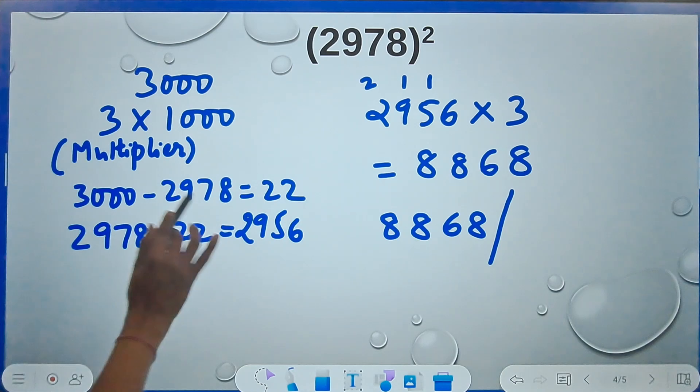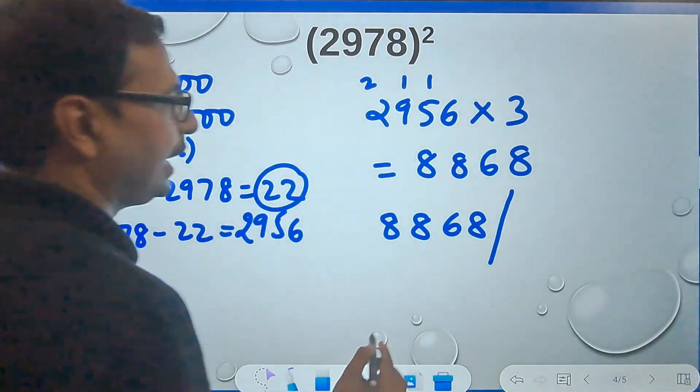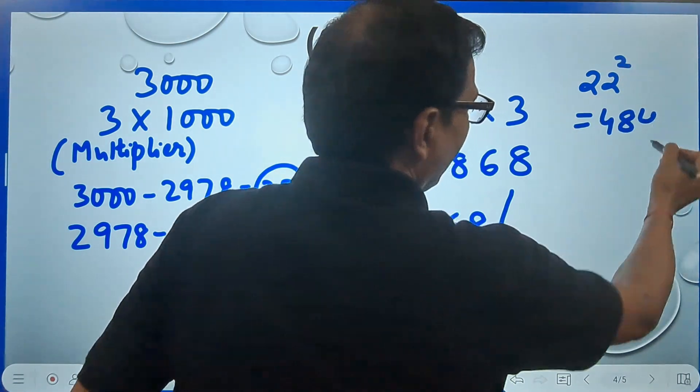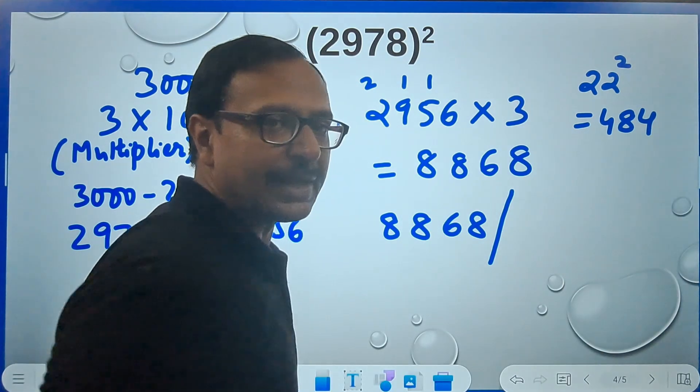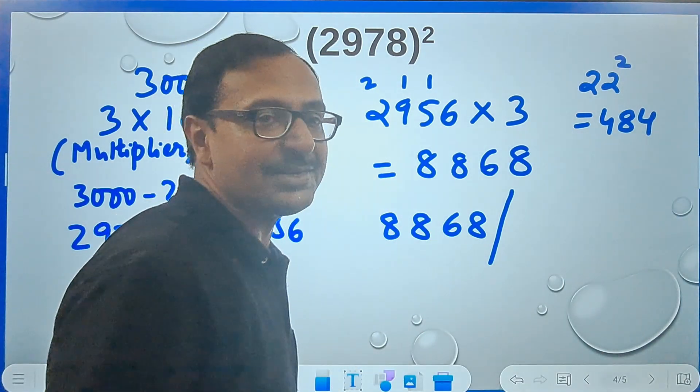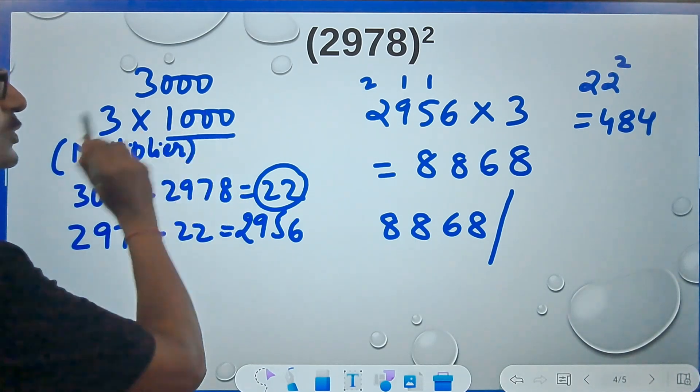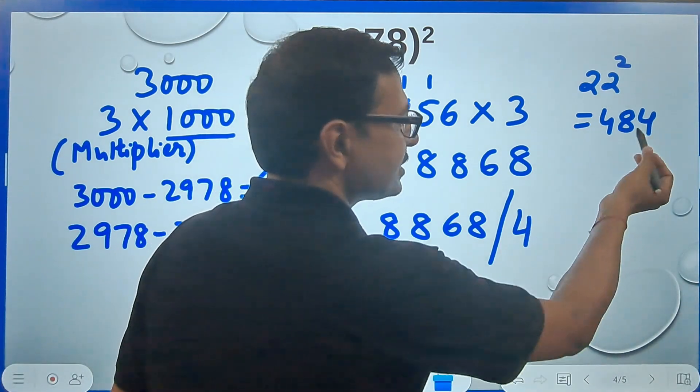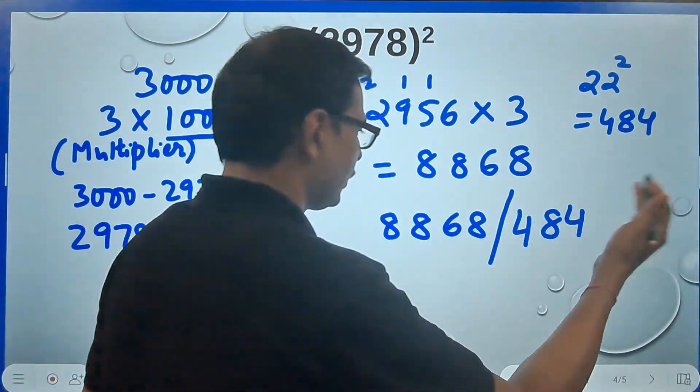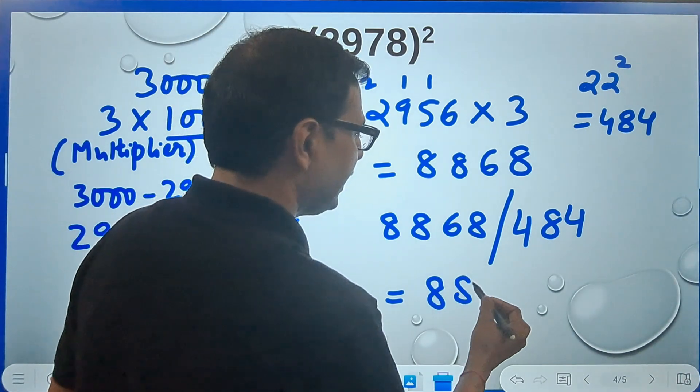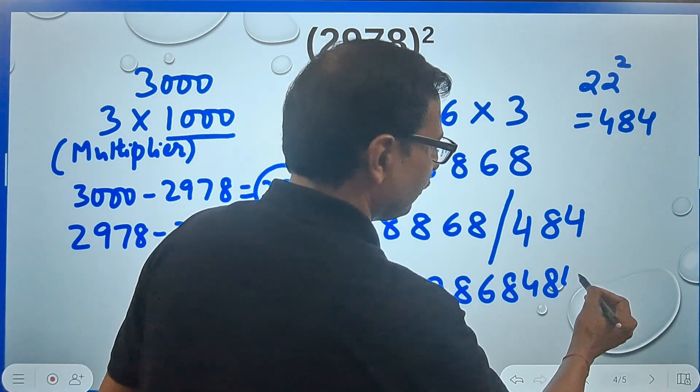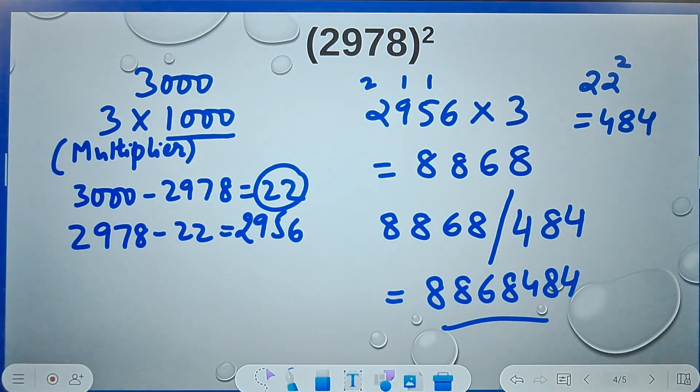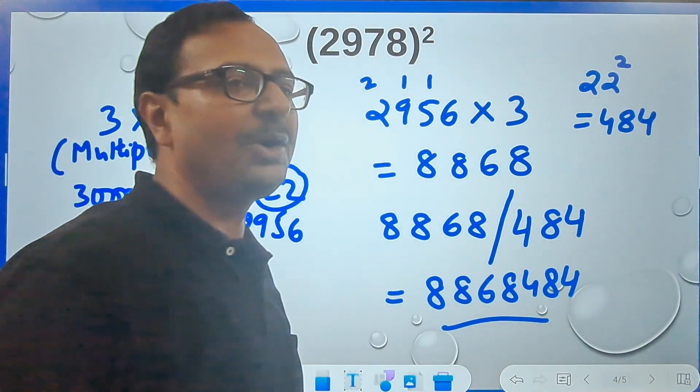Now what was the deficit? The deficit was 22, and 22 square happens to be 484. How many digits I require in the second part of my answer? I required three digits because I have taken the base as 1000. If you take the base as 100, you have to write two digits. 484, these are already three digits, I don't need to do anything. Your answer for the question will be 8868484. Again, check it using the calculators and let me know in the comments whether the answer which we have obtained is correct or not.